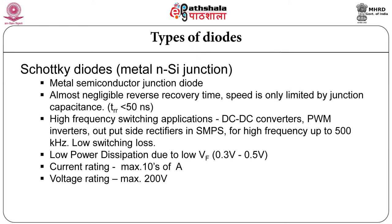The third type of diode is Schottky diode. It is a metal-semiconductor junction diode. Its reverse recovery time is almost negligible — speed is only limited by junction capacitance — and reverse recovery time is less than 50 nanoseconds. These are used mainly for high frequency switching applications such as DC to DC converter. Output side rectifiers in SMPS and operating frequency is up to 500 kilohertz. The advantage is very low switching loss and low power dissipation due to less forward voltage — forward voltage is 0.3 to 0.5 volt. Current rating is maximum tens of ampere and voltage rating is maximum 200 volt. It has a disadvantage of high leakage current, so high peak inverse voltage is not possible.